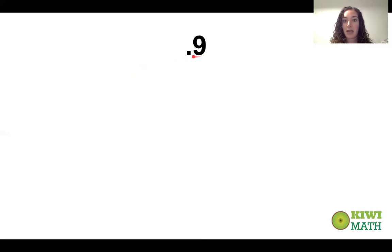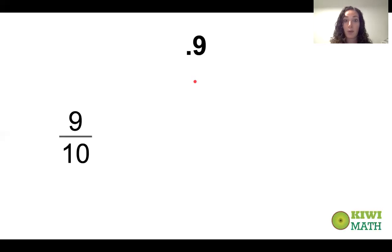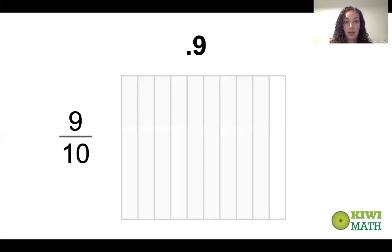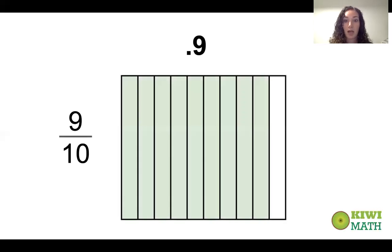What place is that nine in? Because it's the first place after the decimal point, it's in the tenths place, so we would read that as nine tenths. If we were going to write 0.9 as a fraction, it would be nine tenths. And if we wanted to draw a model for that, it would look like nine shaded in out of ten.